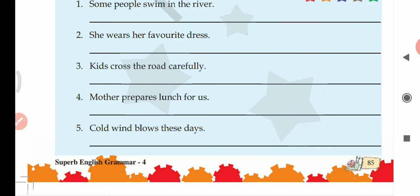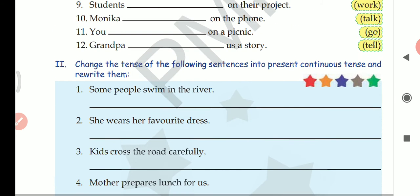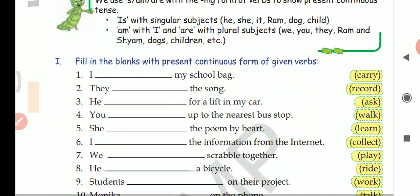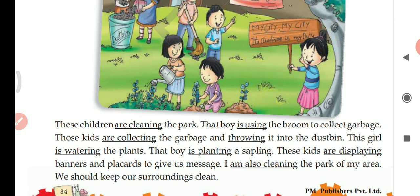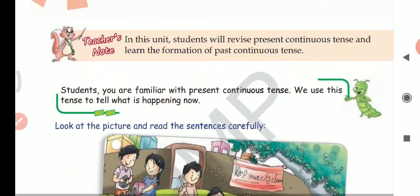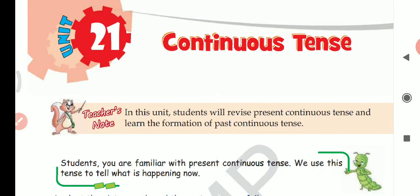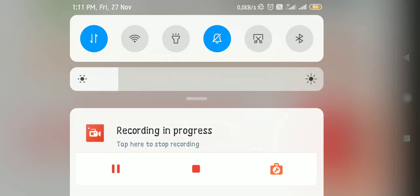So this was present continuous tense - the action that is still going on in the present, the action that is happening right now. That refers to present continuous tense. In the next video I'll explain past continuous tense. Thank you.